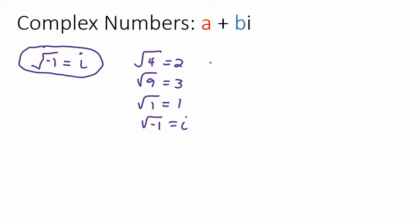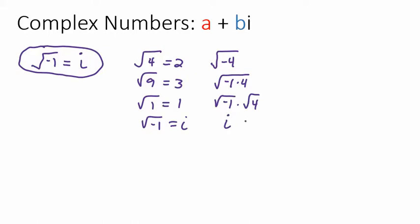So now we can handle something like the square root of negative 4. We know that negative 4 is negative 1 times 4, and by our rules of dealing with radicals we can split this up: the square root of negative 1 is i, and the square root of 4 is 2, so our answer is i times 2, which we usually write as 2i.